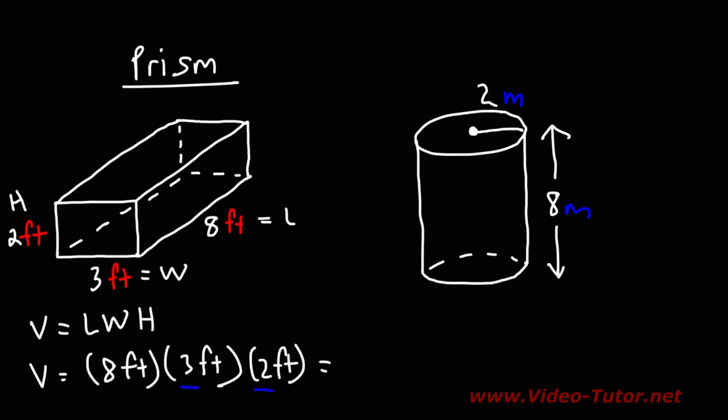Now if we multiply 3 by 2, that's 6. And then 6 times 8, that's 48.